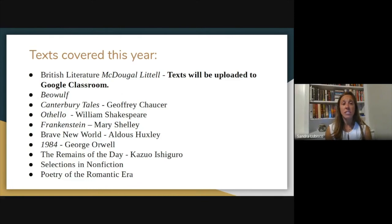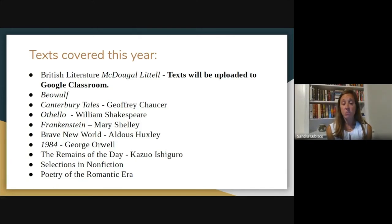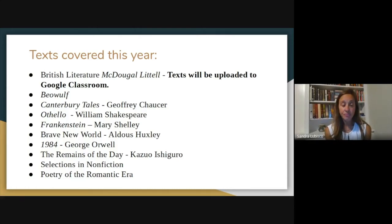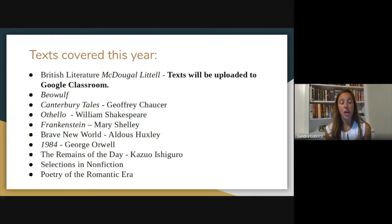Some of the texts we're going to cover this year from the British literature textbook will be uploaded to Google Classroom, so there will be a PDF copy of all our British lit texts right there. We already started the year with Beowulf — the PDF copy is online from the textbook, making it easier for students to digitally access the text. We will be working with annotation tools to annotate those texts virtually, and I'll always have links to resources through Google Classroom.